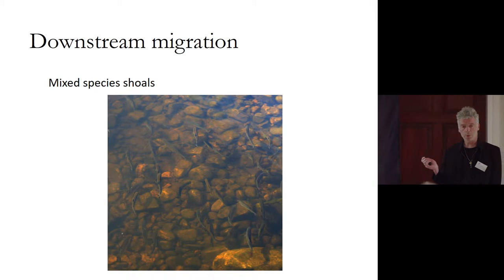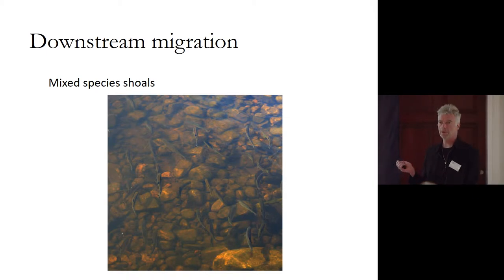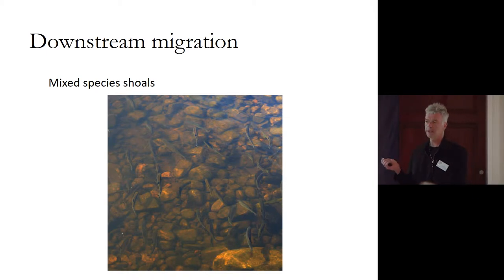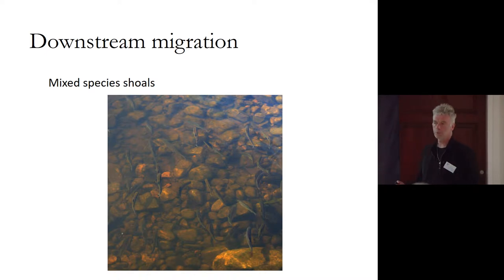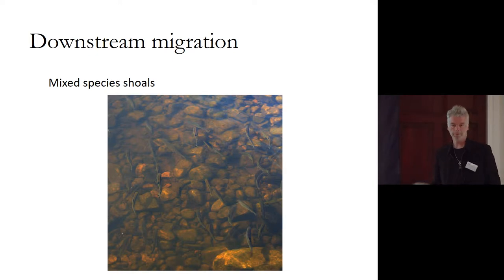We also observed something I don't think has been reported before: during the outward migration, salmon and trout were quite often using shoals of roach to migrate together, probably to avoid predation. They were quite often seen within these shoals.